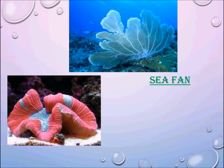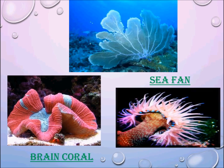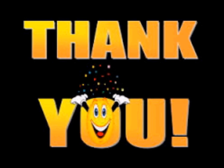This is the representation of class Scyphozoa. These are examples of cnidarians: brain coral, sea fan, and sea anemone. This brings this section to an end. In the next section we will be discussing about the other phylum, that is Ctenophora. Thank you and stay tuned.